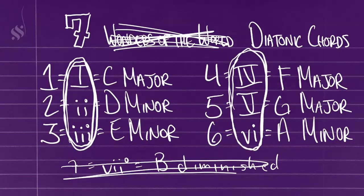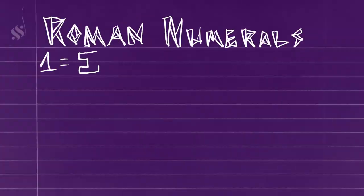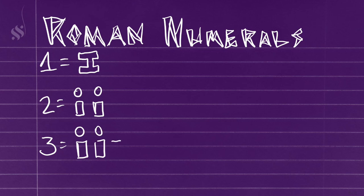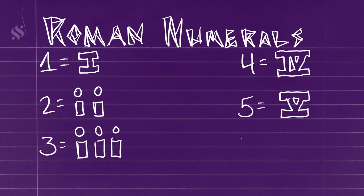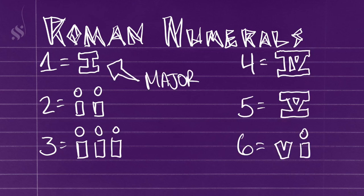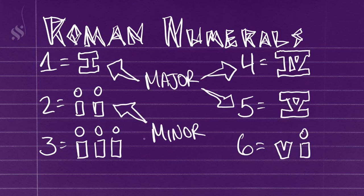You'll notice that I was using Roman numerals to denote the chord number — this is a very common system that you'll see a lot. Capital Roman numerals imply major, lowercase Roman numerals imply minor. Take a good look at this and get really familiar with it, because these are going to come up very frequently if you start going down this road.